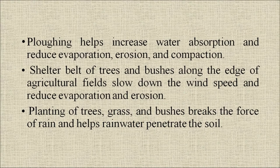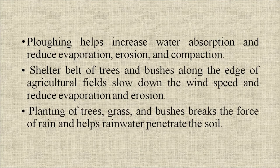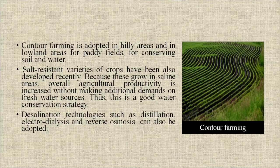Ploughing helps increase water absorption and reduces evaporation, erosion, and compaction. Shelter belts of trees and bushes along the edges of agricultural fields slow down wind speed and reduce evaporation and erosion. Planting of trees, grasses, and bushes breaks the force of rain and helps rainwater penetrate the soil. Contour farming is adopted in hilly areas and in lowland areas for paddy fields for conserving soil and water.